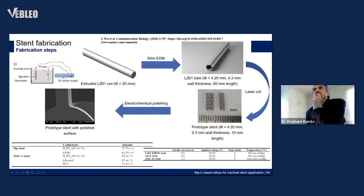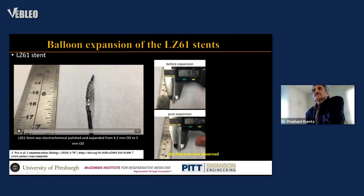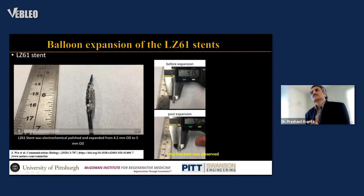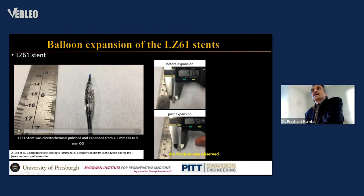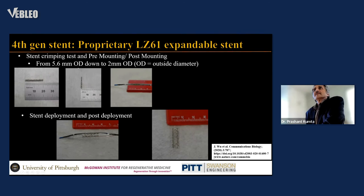We fabricated the stent by first extruding the rod, then using wire EDM to cut it into a tube, followed by laser cutting to prepare the prototype stent — approximately 4.2 mm diameter, 300 micron wall thickness, and 10 mm length. Electrochemical polishing using phosphoric acid and ethanol with DC voltage produced a smooth surface architecture. The LZ61 stent and AZ31 control, along with 316 stainless steel stent, were all wire EDM'd and electrochemically polished. Balloon expansion testing confirmed the stent can expand from 4.2 to 5 mm without fracture, and crimping from 5.6 to 2 mm showed no fracture.